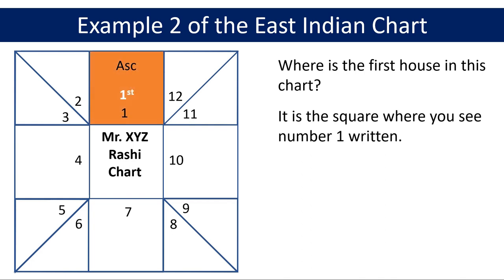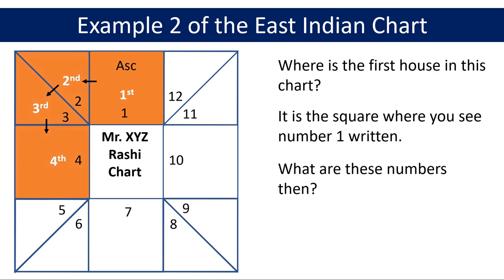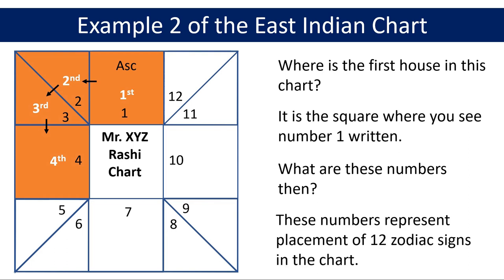The houses two, three, four, etc. could be located by going in the anticlockwise direction from the first house as we have learned previously. So what are these numbers then? Like the previous chart, these numbers represent the placement of the 12 zodiac signs or Rashis in this chart. Since it is Aries ascendant or Mesha lagna in this chart, the sign of the ascendant is Aries or Mesha, and therefore ASC appears in the square which is the fixed position of the first zodiac sign Aries or Mesha in the East Indian chart, represented by number one. Since the position of the ascendant becomes the first house, it is just a coincidence that the square which is the fixed position of the first zodiac sign is also the first house in this chart. Similarly, the triangle which is the fixed position of the second zodiac sign is also the second house in this chart, and so on.